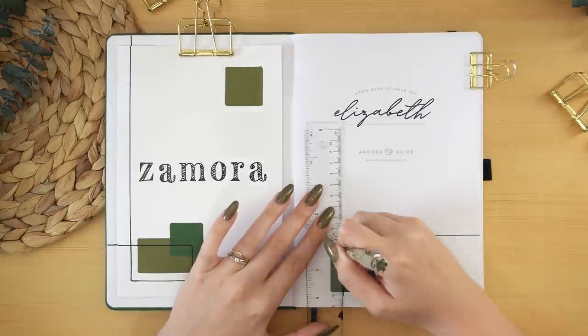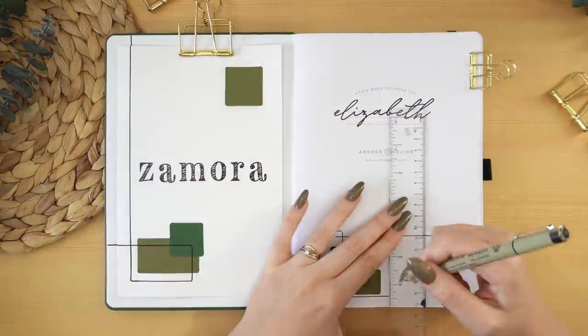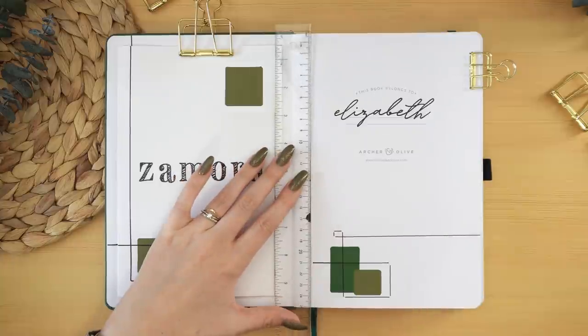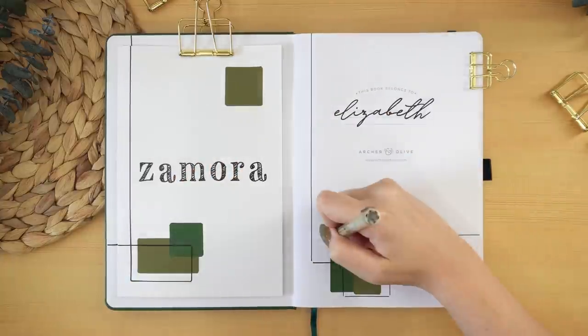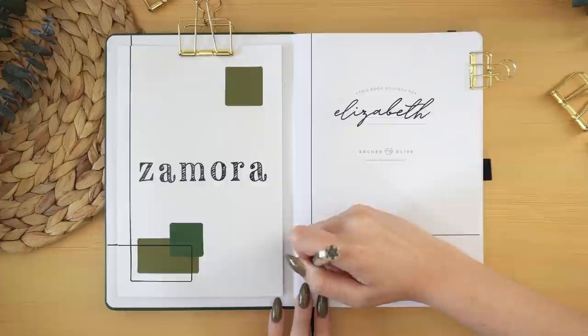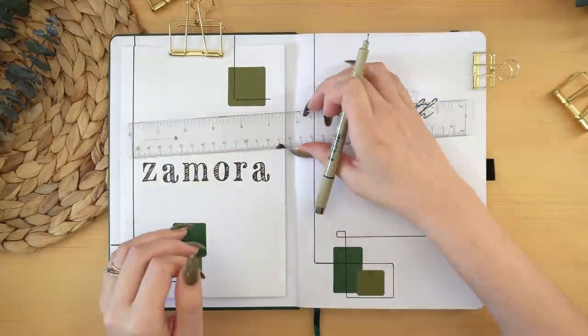I'm using the black 0.7 millimeter acrylograph for the headers and fonts, but for the lines themselves I decided to use a Sakura Micron in 08, just so that I could create them a little faster without having to wait the couple seconds for the acrylograph to dry.